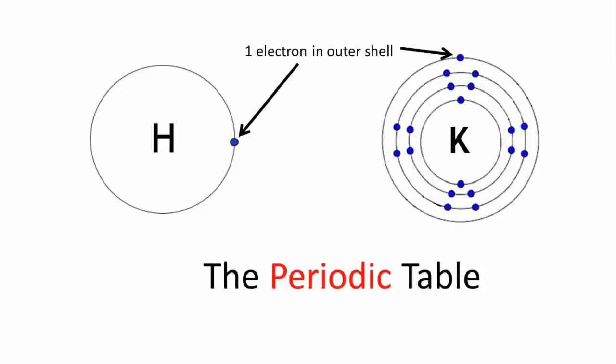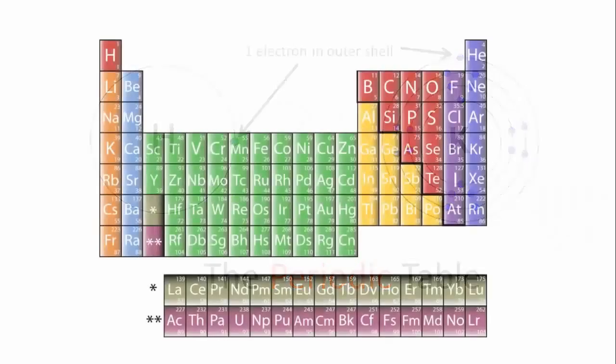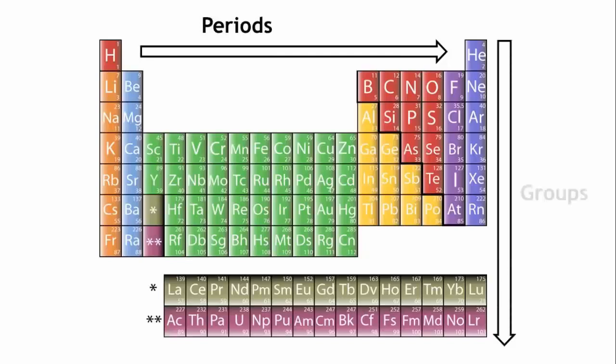The recurring properties are organized so that you can easily see similarities between elements. The periodic table is arranged in periods and groups, going from the light elements at the top to the heavy elements at the bottom.